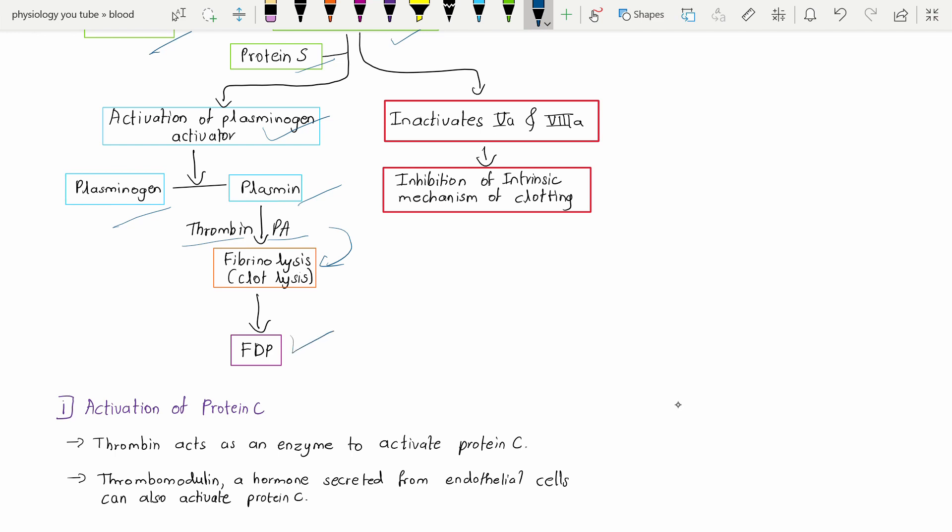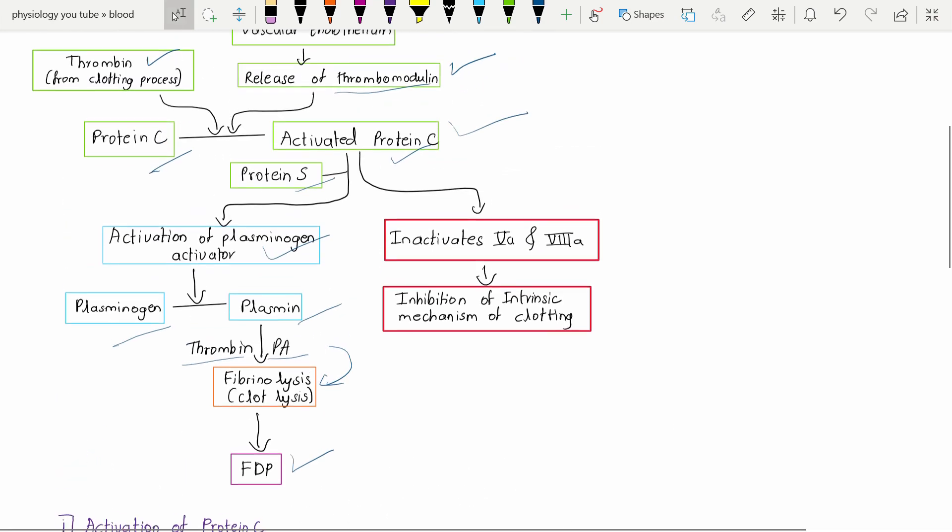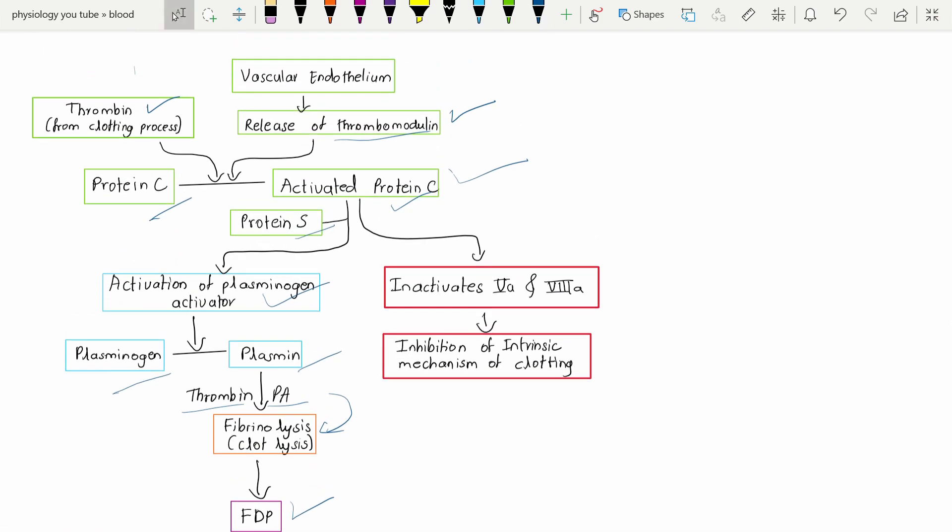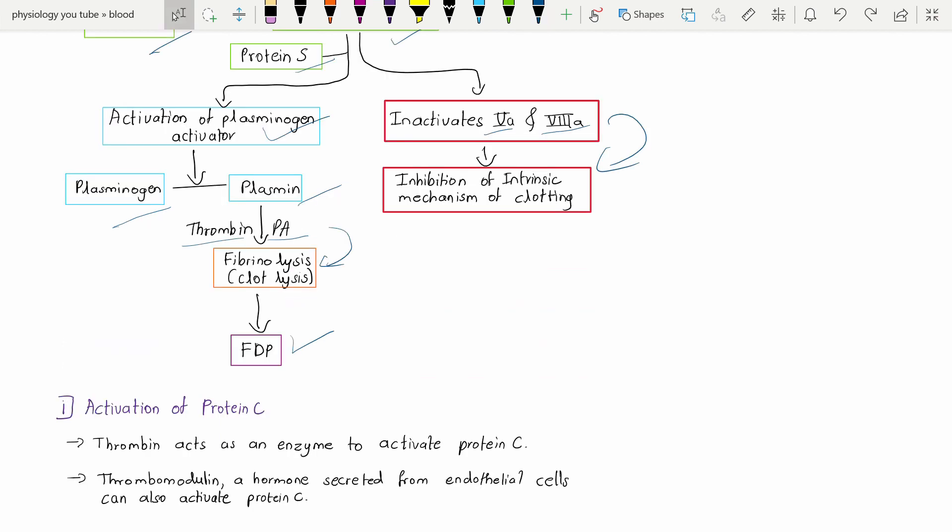This degraded fibrin is called fibrin degradation product. We need to prevent further clot formation, so what happens is that the activated protein C inactivates the factor 5 and the factor 8. What is the name of factor 5 and factor 8? Factor 5 is proaccelerine, factor 8 is anti-hemophilic factor A.